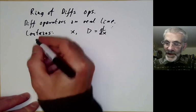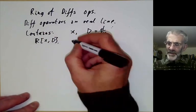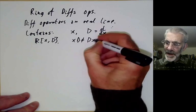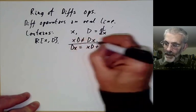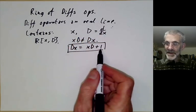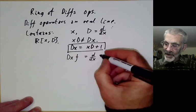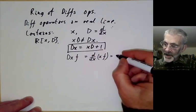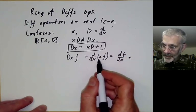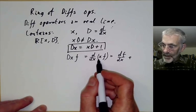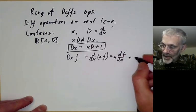Our differential operators are polynomials over the reals in x and D, but we've got to be careful because xD is not equal to Dx. In fact, Dx = xD + 1. If you think about it, this is Leibniz's rule for differentiation. If I apply Dx to a function f, this is d/dx of xf, which is x(df/dx) + f.